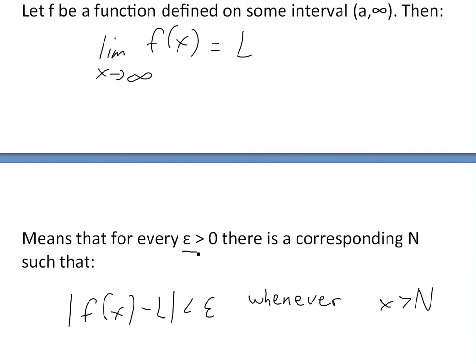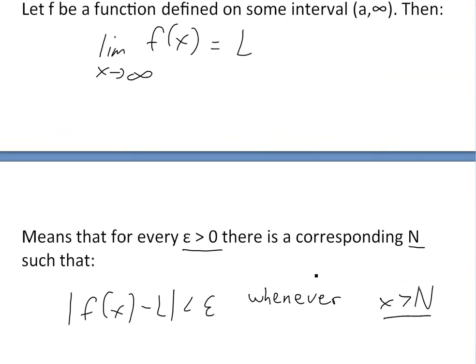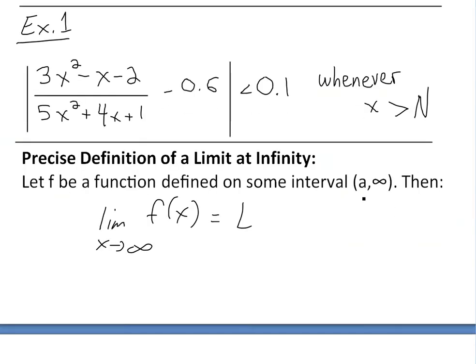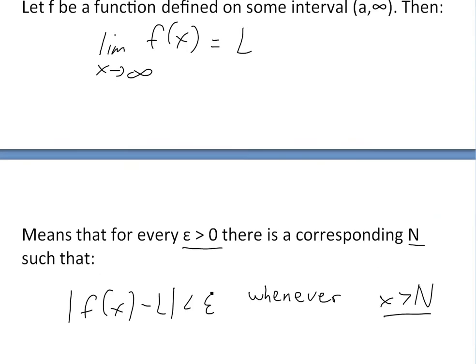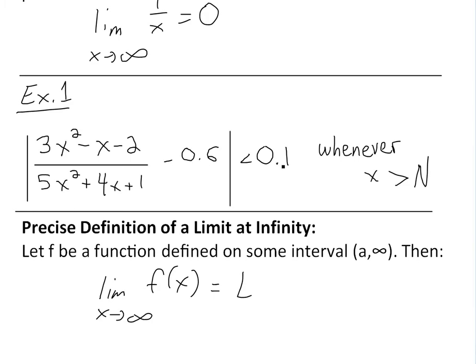This means that for every ε > 0 there is a corresponding N value such that |f(x) - L| < ε whenever x > N. So all we're doing is finding this N value because N is dependent on this epsilon. Since we're given a value of epsilon, we could find out what this N value should be.